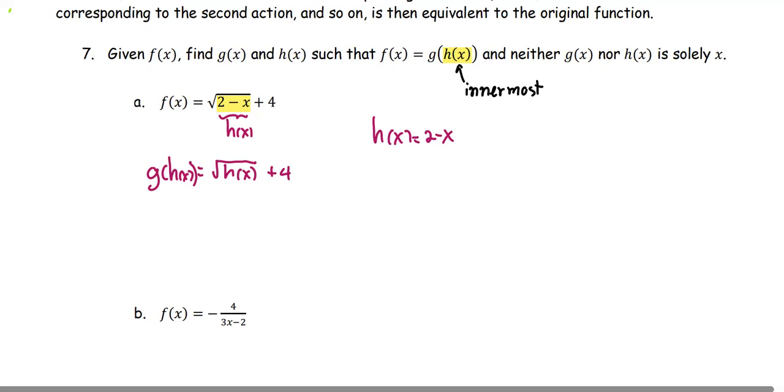And then we can see this as the function g of h(x), where we treat h as the input. Now we write g in the simple form. It's going to be g of any input x in the form of square root of x plus 4. We got the outer function.